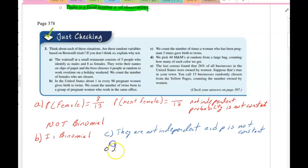Okay, letter D. We pick 40 M&Ms at random from a large bag, counting how many of each color. In this particular problem, there are not two outcomes. So there's more than two outcomes. So this is not binomial.